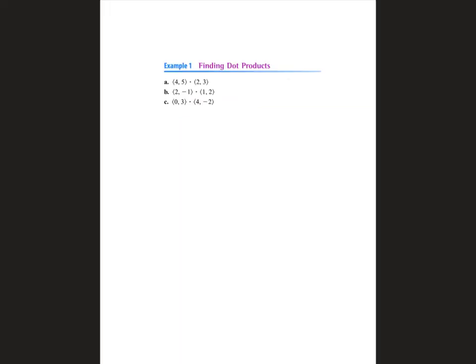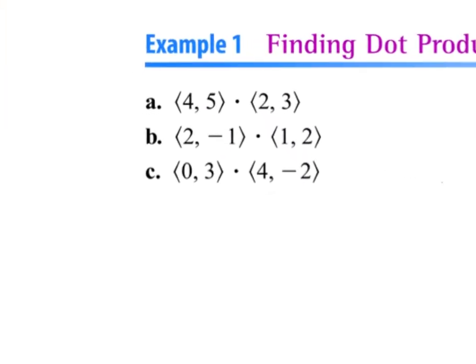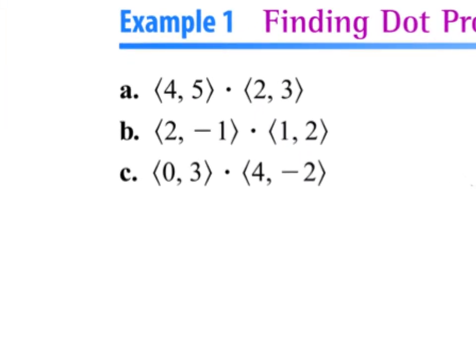Let's find the dot product. The dot product is the sum of the first component times the first component plus the second component times the second component. For example a, we have 4 times 2, which is 8, plus the second times the second, which is 15. So 8 plus 15 gives us 23 — the dot product of these two vectors is 23.